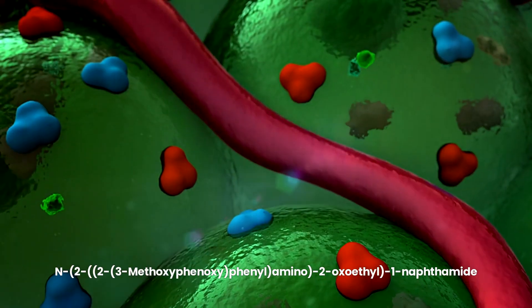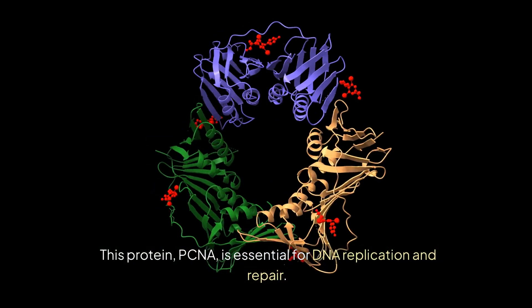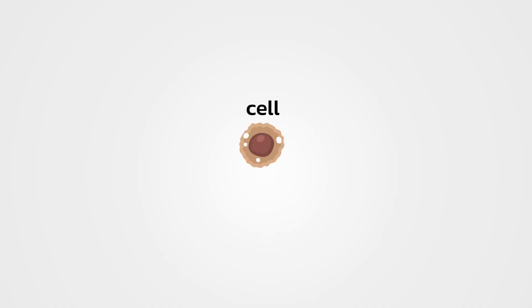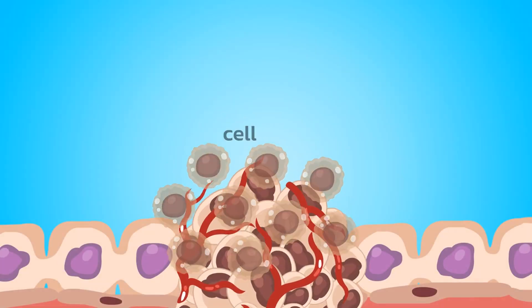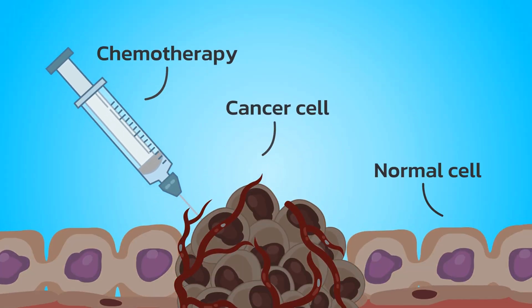...a crucial protein in cancer cells. This protein, PCNA, is essential for DNA replication and repair. By blocking PCNA, AOH1996 aims to halt the growth of tumors and induce cancer cell death.